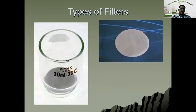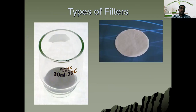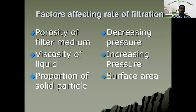Let us see some pictures of types of filters. You can see the glass filters on the left side and the filter paper on the right side. The quality of the filtrate depends on the filter medium. If you use a filter paper, the quality is low. Whereas if you use a sintered glass filter, the quality of filtrate is more. Now the factors affecting filtration: first is the porosity of the filter medium. If the porosity is more, then the quality of filtration will be less. If the porosity is less, the quality of filtration will be more.